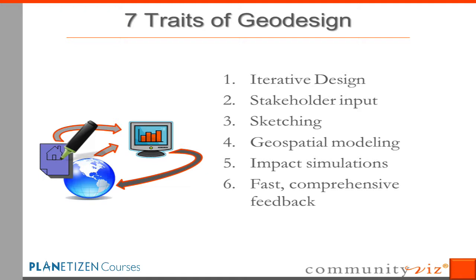Rather than having to wait two weeks for a new result and then having another conversation, the feedback supports a real dialogue between people. Sixth, it's comprehensive — it looks at many different dimensions of a plan or decision, not just a single one. Finally, and perhaps most importantly, the seventh trait: geodesign has a decision orientation. Geodesign is meant for use early in the planning process; it's good for choosing directions, setting priorities, and raising awareness. It's not as well suited for specific details, implementation, or engineering.